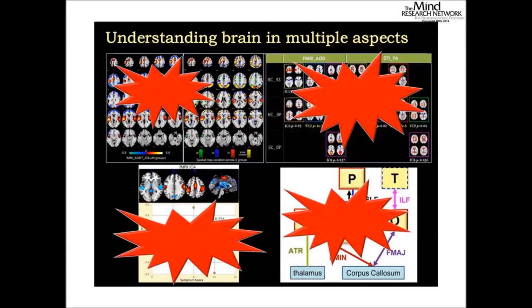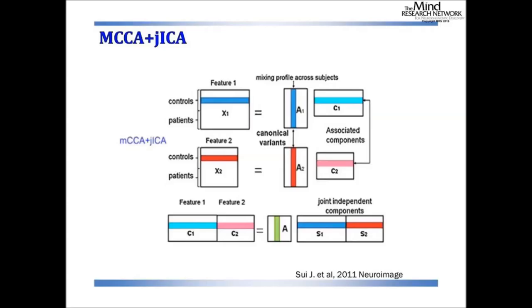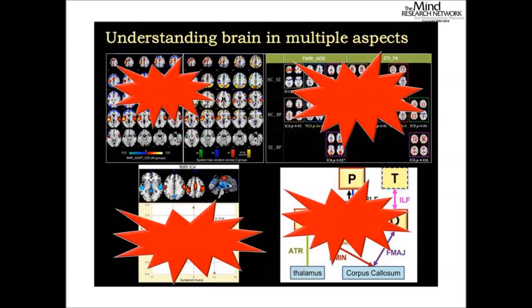I will give an example of using MCC plus GIC — a fusion method — to fuse DTI with fMRI for schizophrenia and bipolar. In this previous work, we separate data into spatial maps and loadings. These loadings represent how each component varies across different subjects. For each modality, we can decompose it into loadings and spatial maps, allowing us to understand the brain from multiple aspects.